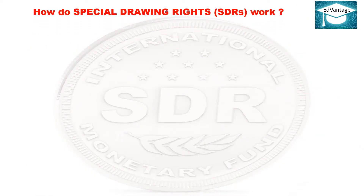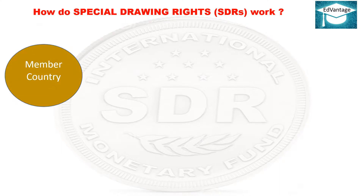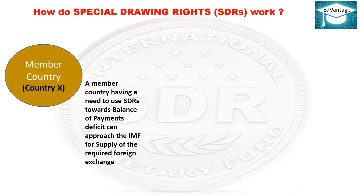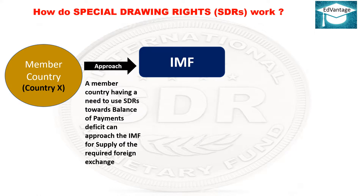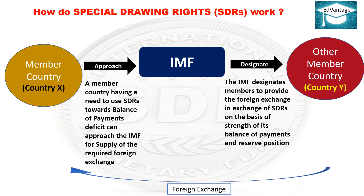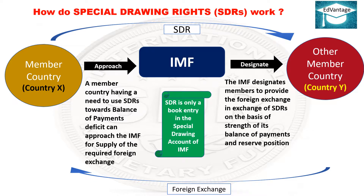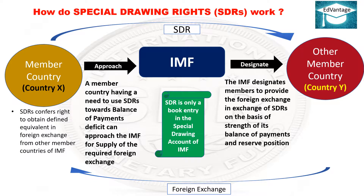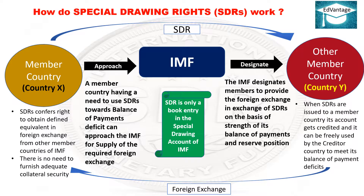How do Special Drawing Rights work? A member country (say country X), having the need to use SDRs towards a balance of payment deficit, can approach the IMF for supply of the required foreign exchange. The IMF designates members to provide the foreign exchange in exchange for SDRs, based on the strength of their balance of payments and reserve position. SDR is only a book entry in the Special Drawing Account of IMF. SDRs confer the right to obtain defined equivalent foreign exchange from other member countries without furnishing collateral security. When SDRs are issued to a member country, its account gets credited and can be freely used to meet balance of payment deficits.